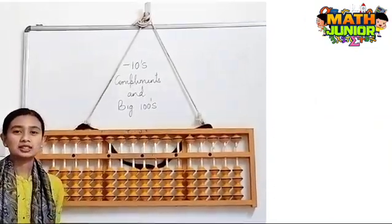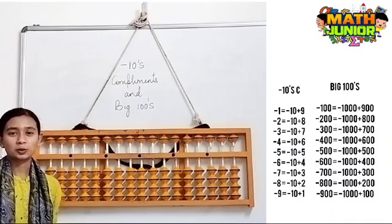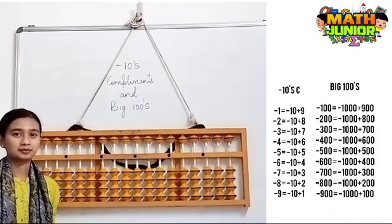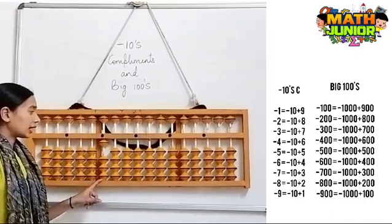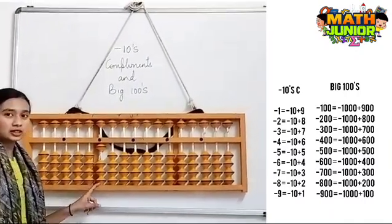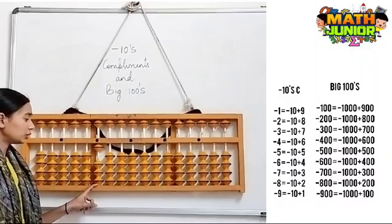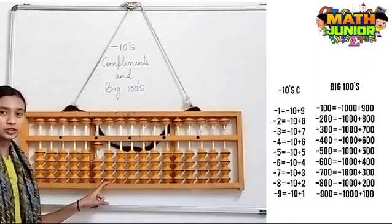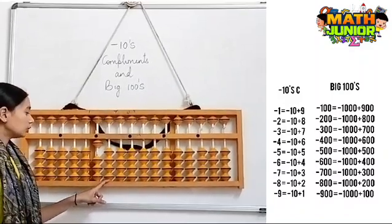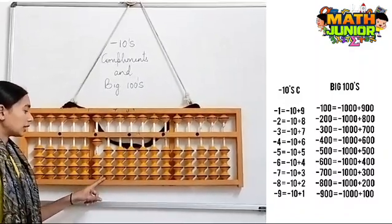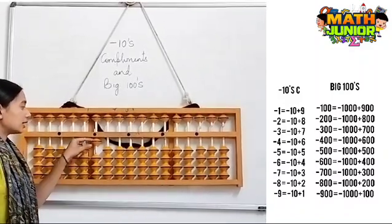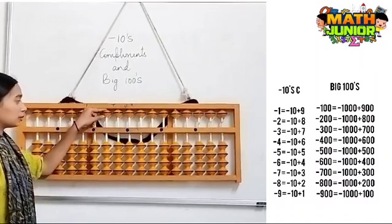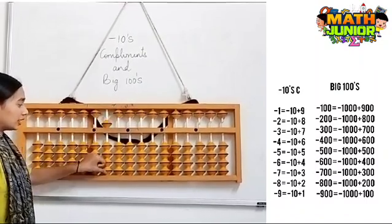Now let's learn minus 10's complement and its big 100's. I have 1000 here and I need to remove 100 in the 100's lot. So the formula for minus 100 is minus 1000 plus 900.